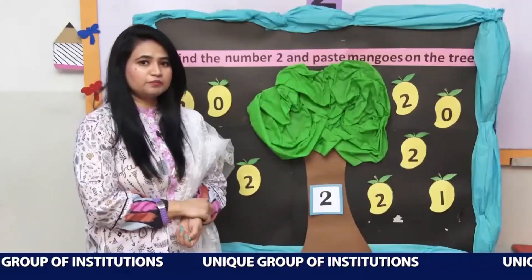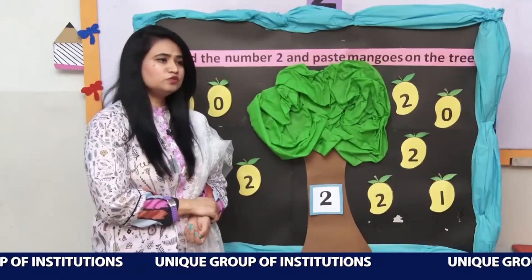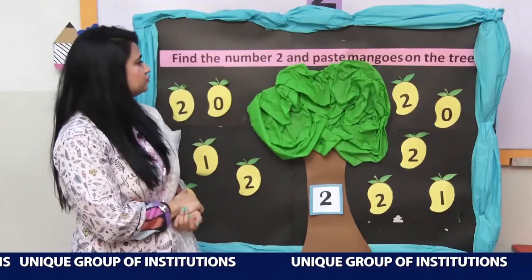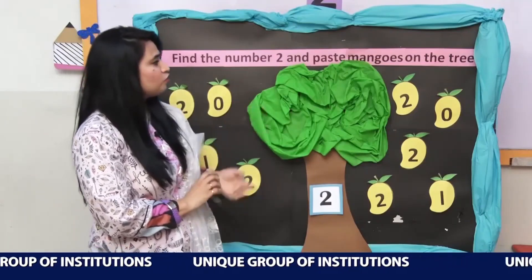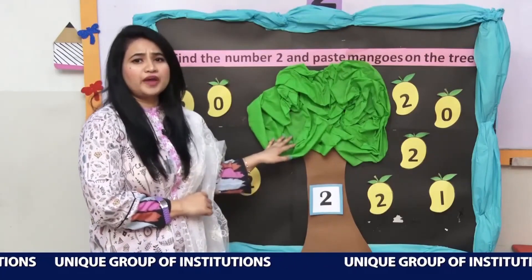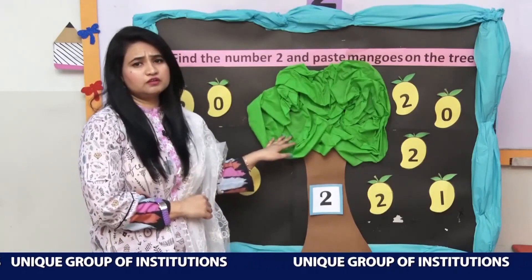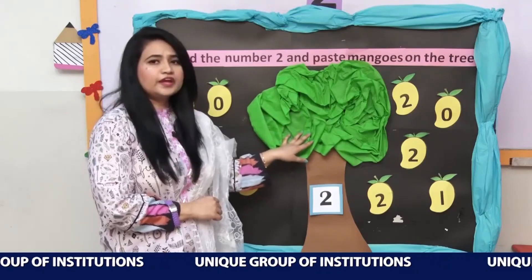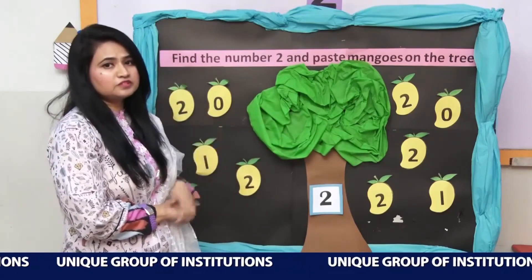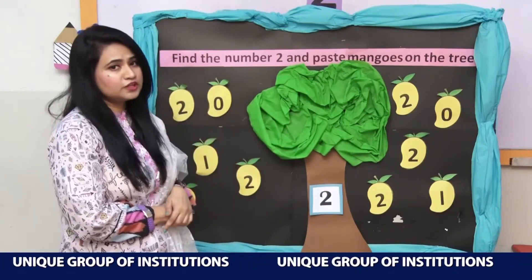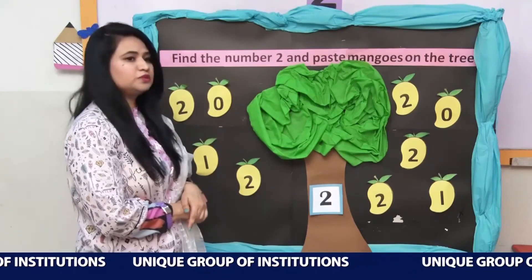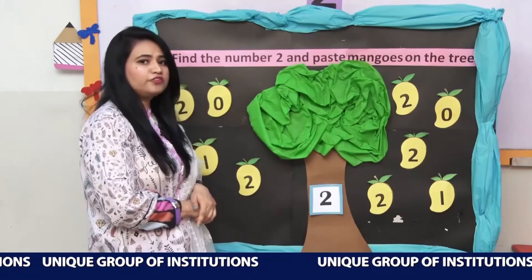Let's do the activity of number 2. The statement is: find the number 2 and paste mangoes on the tree. As you can see here is a mango tree. We have to find number 2, then paste the mango on the tree.